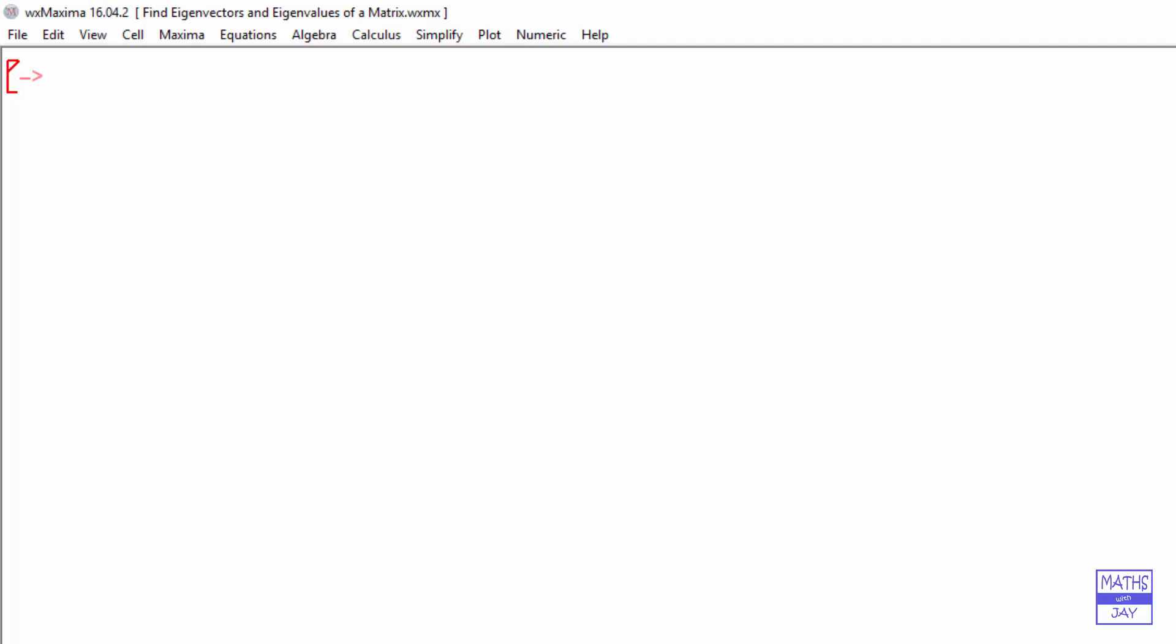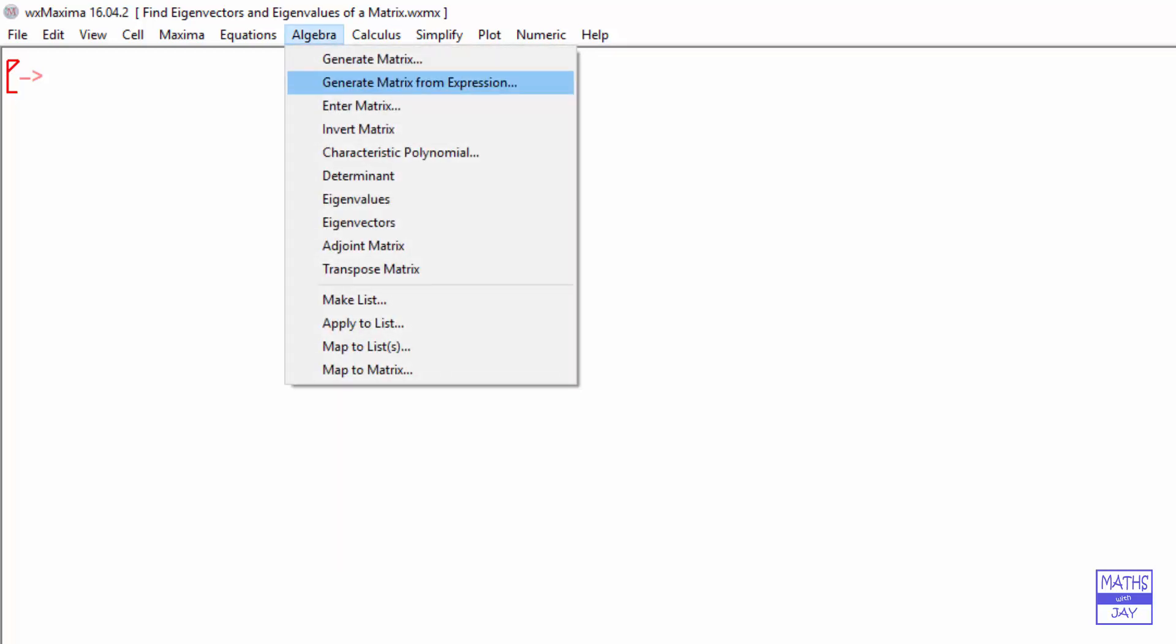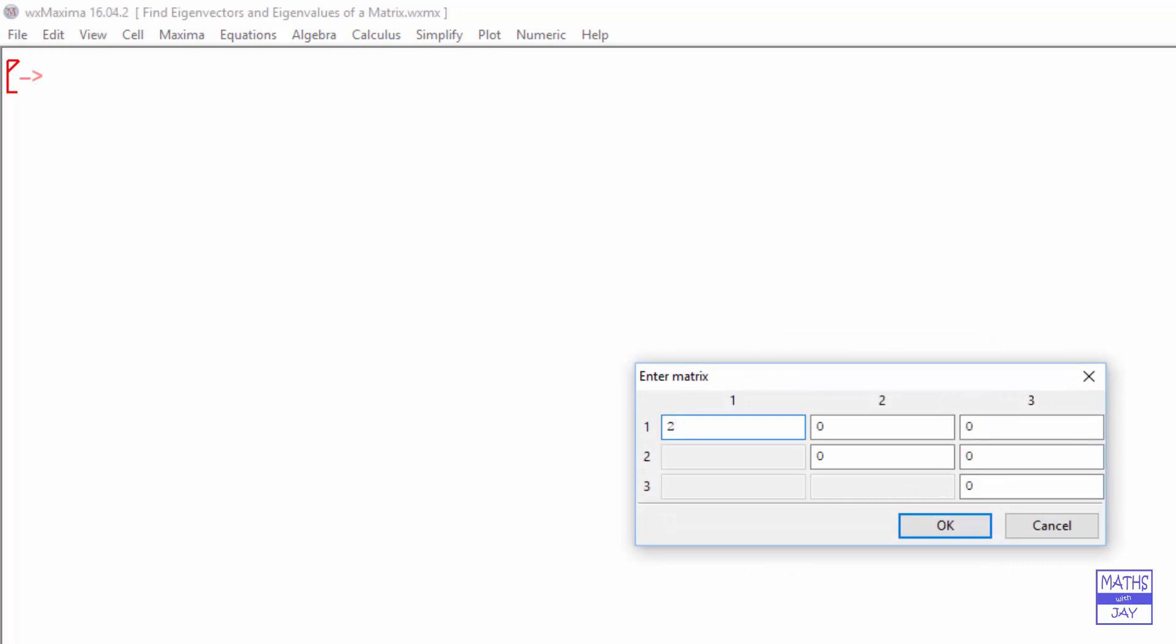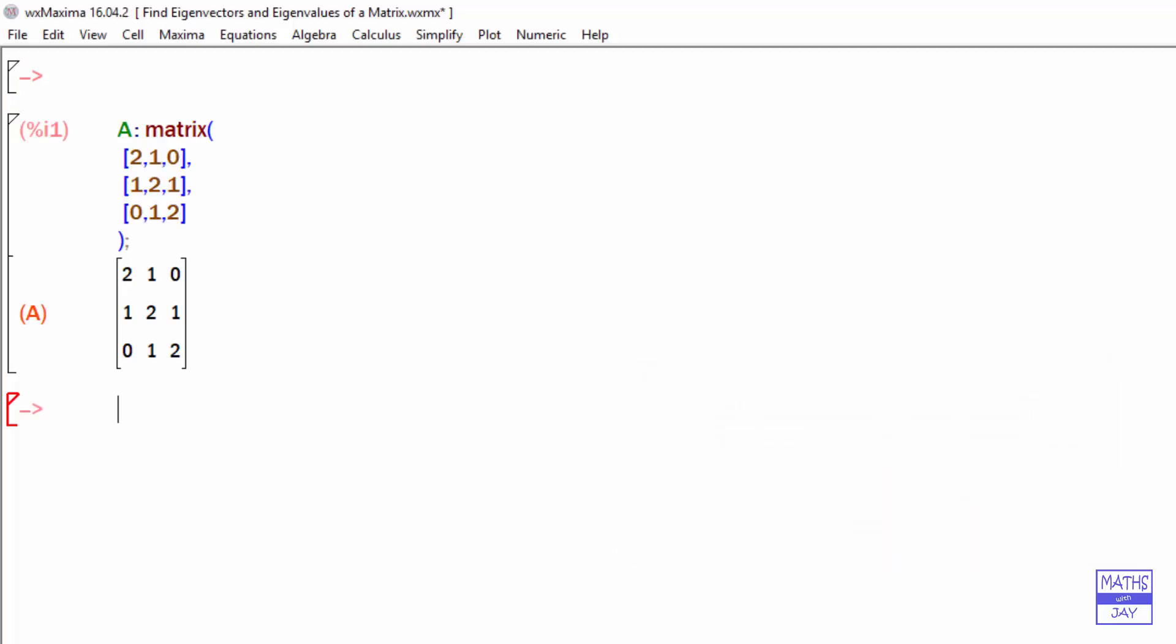So let's start by entering the matrix. We're using enter matrix, a 3x3 matrix. It's a symmetric matrix, and we'll call it A. We're going to use tab to move from one element to the next here. So there's our matrix A.